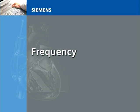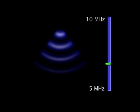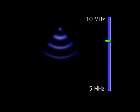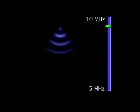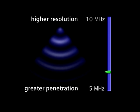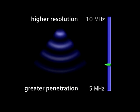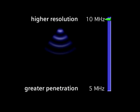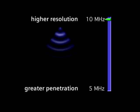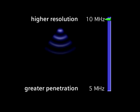Frequency. The imaging frequency you select affects both the resolution and penetration of the image. The higher the frequency, the higher the resolution or detail seen in structures. Frequency is inversely related to penetration of the ultrasound signal — that is, the higher the frequency, the lower the penetration. For the best image quality, use the highest frequency possible that maintains sufficient penetration throughout the entire image.